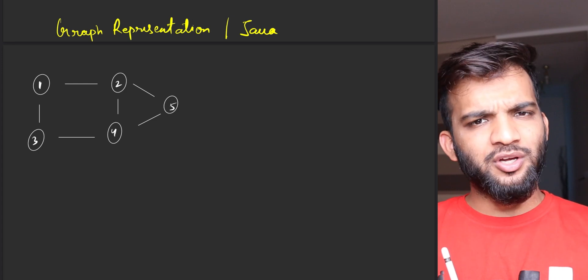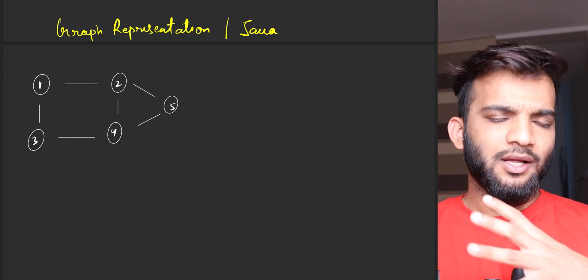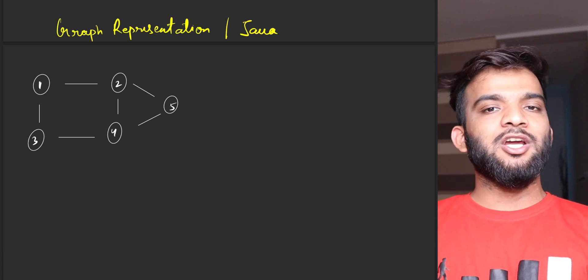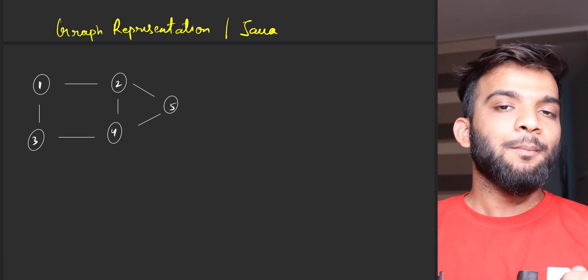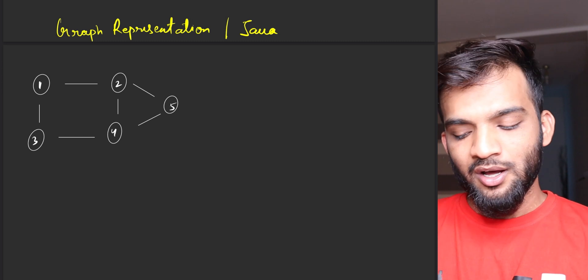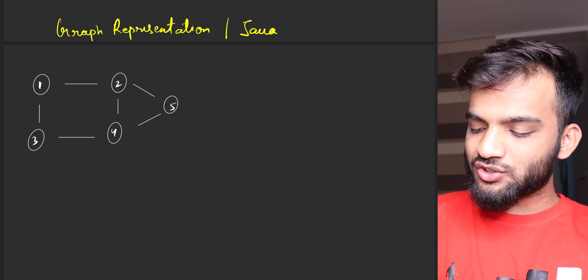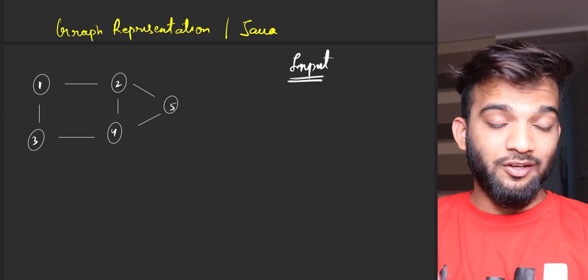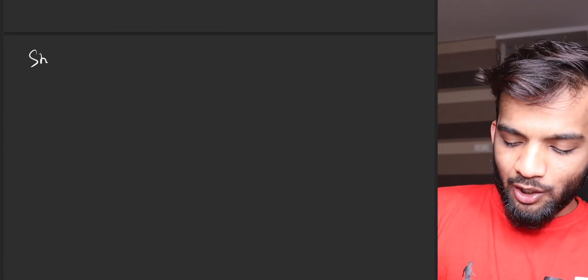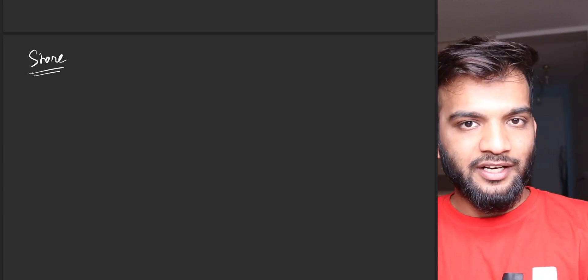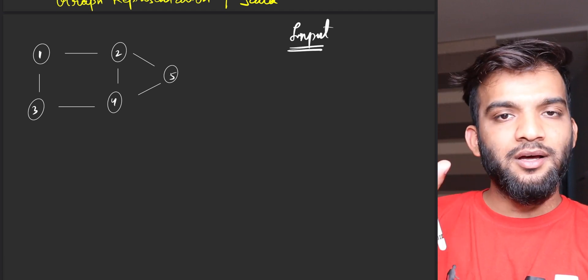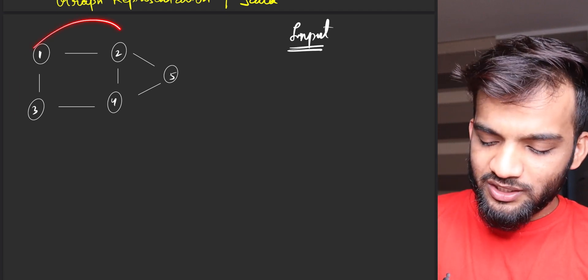In the previous video we learned about graphs, their types, and all the other terminologies used in graphs. In this video we'll be learning about how to store such a complex data structure in Java. I'll be breaking the video into two parts: the first being how the input of a graph is given to you, and the next being how do you store it and which data structure we use.